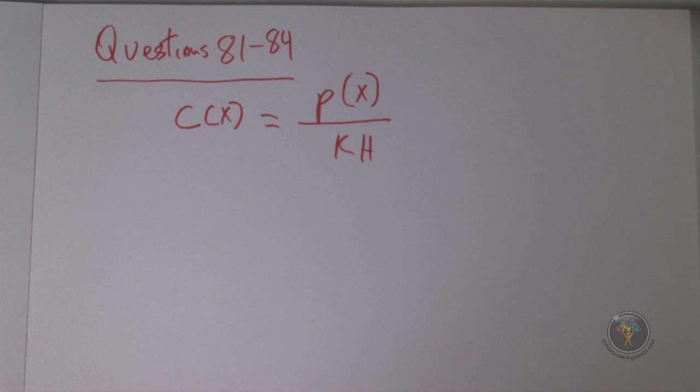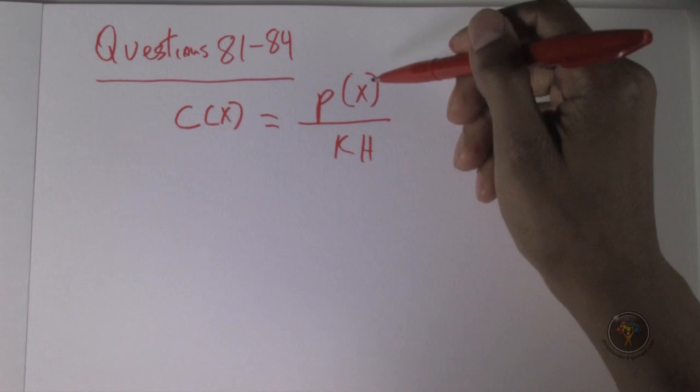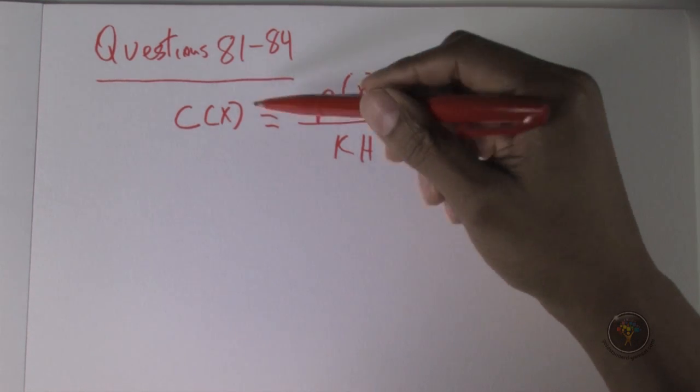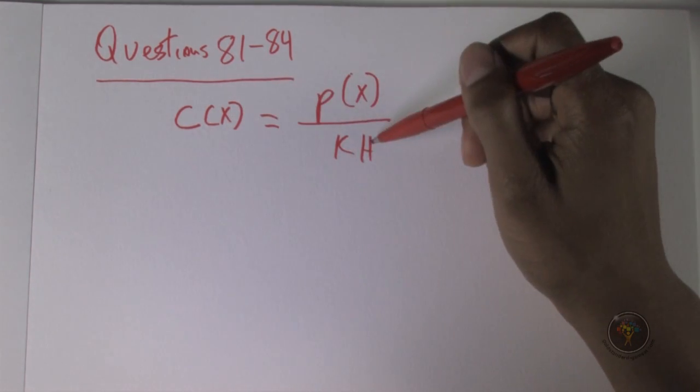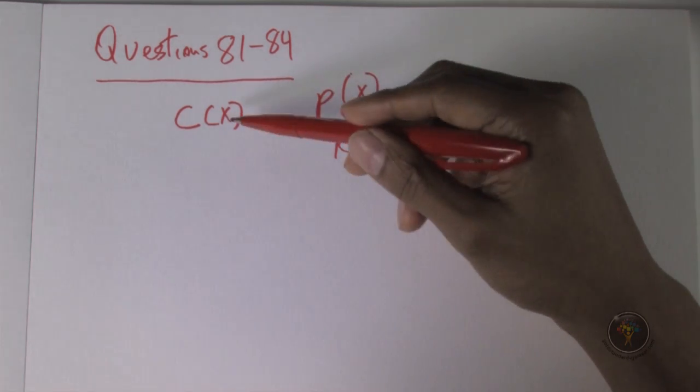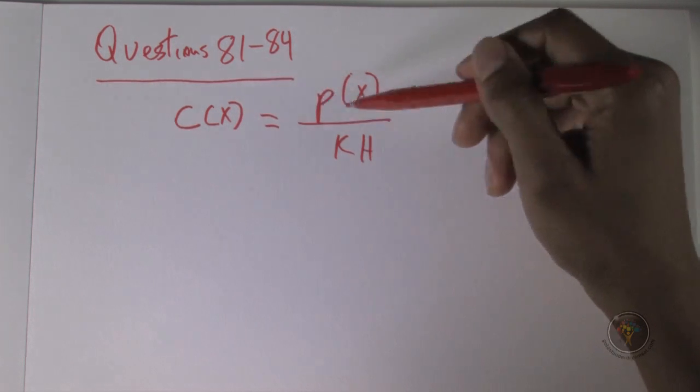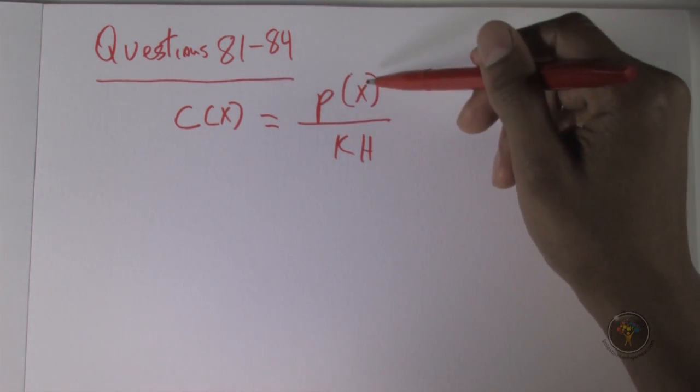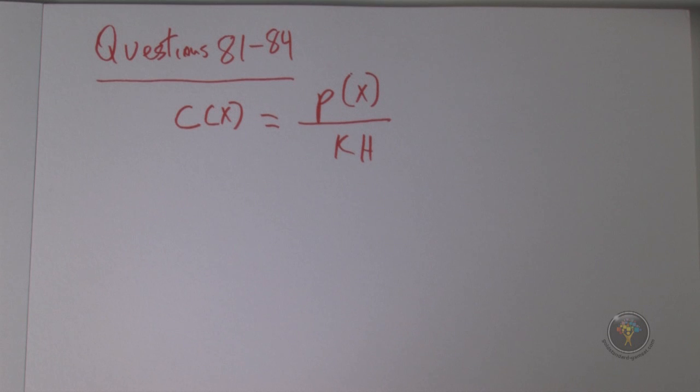D: the higher partial pressure of nitrogen in air ensures that its concentration in plasma will exceed oxygen. So the higher partial pressure is what's leading to the concentration, not the KH, because you would want a very low KH in order to have a higher concentration, or the other option is a very high partial pressure.